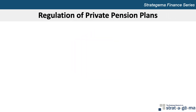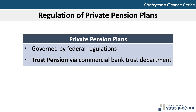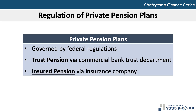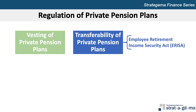The third learning objective in the chapter relates to regulation of private pension plans. Private pension plans are created to serve employees in the private sector and are governed by federal regulations. To set up a pension fund, a sponsor corporation may establish a trust pension fund through a commercial bank's trust department or an insured pension fund through an insurance company. A pension plan's vesting schedule represents the time at which rights to assets that have accumulated in the employee's pension fund cannot be taken away. Employees whose employment period is shorter than the vesting schedules are not allowed to retain the assets accumulated within their respective pension funds. The Employment Retirement Income Security Act, or ERISA, allows employees that change employers to transfer any vested amount into the private pension plan of their new employer or to invest it in an individual retirement account or IRA.